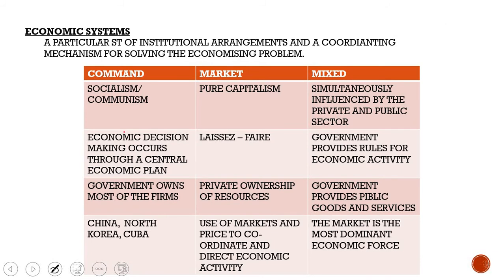Now we look at the different economic systems. An economic system is a particular set of institutional arrangements and a coordinating mechanism for solving the economizing problem. It tells you what goods to produce, how these goods are going to be produced, who gets the goods and services, how to promote technological progress, and how to accommodate change. Economic systems differ by who owns the factors of production and the method used to motivate, coordinate, and direct economic activity.